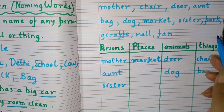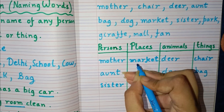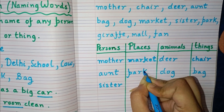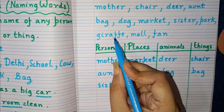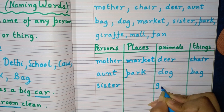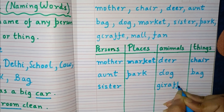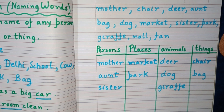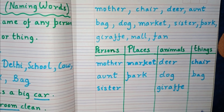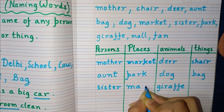Next is park. Park is the name of a place, so we will put it in the places column — P-A-R-K, park. Next is giraffe. Giraffe is an animal, so we will put it in the animals column — G-I-R-A-F-F-E, giraffe. Next is mall. Mall is a place, so we will write it in the places column — M-A-L-L, mall.